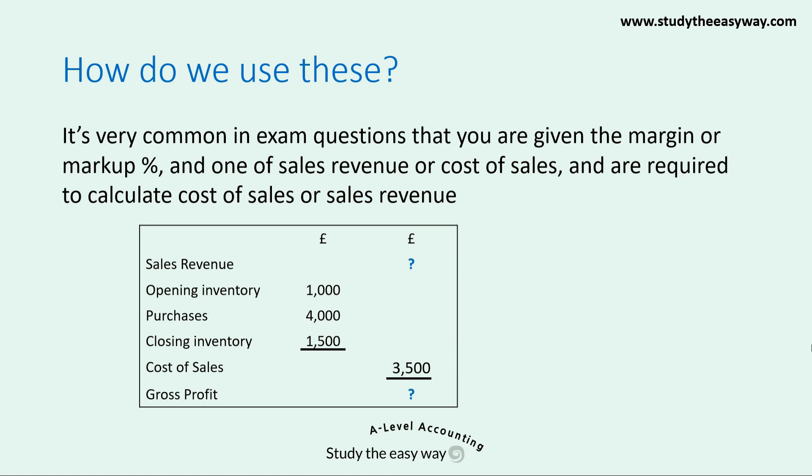Alternatively, you could have a question that provides information about opening inventory, purchases and closing inventory, and you're given the cost of sales figure but don't have a sales revenue figure. You can use the margin or markup percentage combined with the cost of sales figure to calculate that missing sales revenue figure. This technique is extremely important in building an income statement.